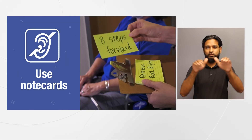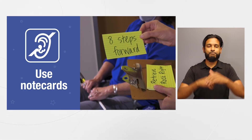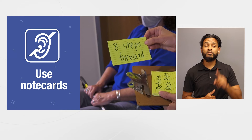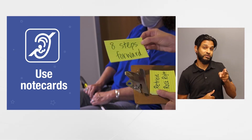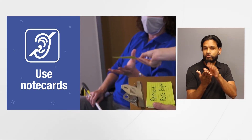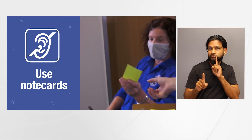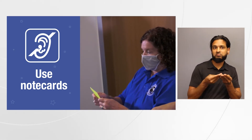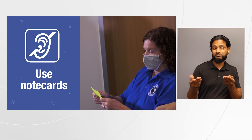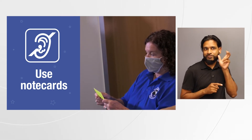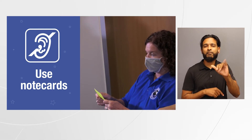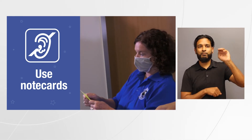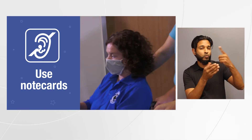For hearing impaired students, instructions can be written on note cards and handed to the student one at a time, instead of hearing the instructions verbally — much like a rover on Mars may read one line of code at a time when navigating the Martian surface.